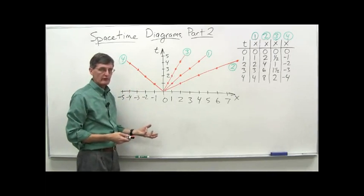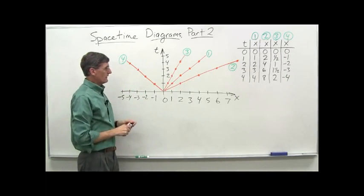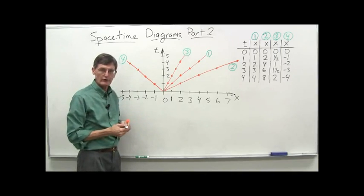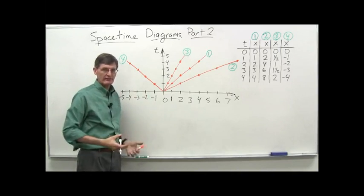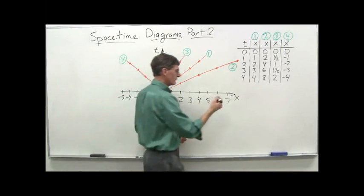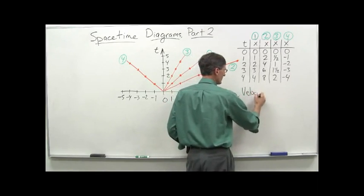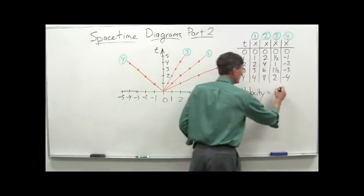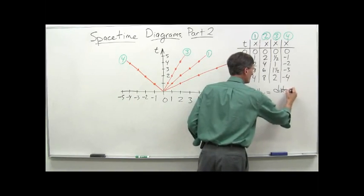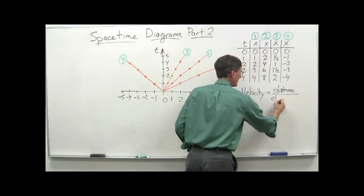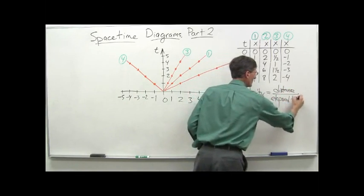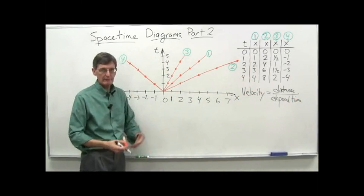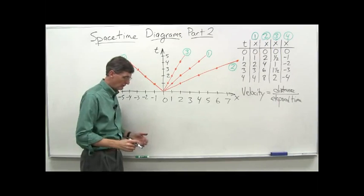So, four different runs of our spaceship. Now let's remind ourselves about the concept of velocity. Velocity is distance divided by time — distance covered divided by elapsed time. Miles per hour, kilometers per hour, feet per second, meters per second, and so on.